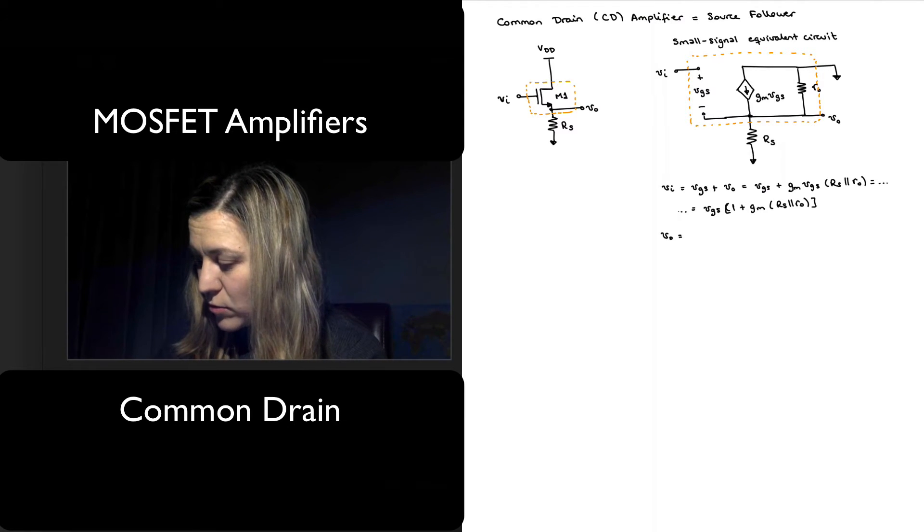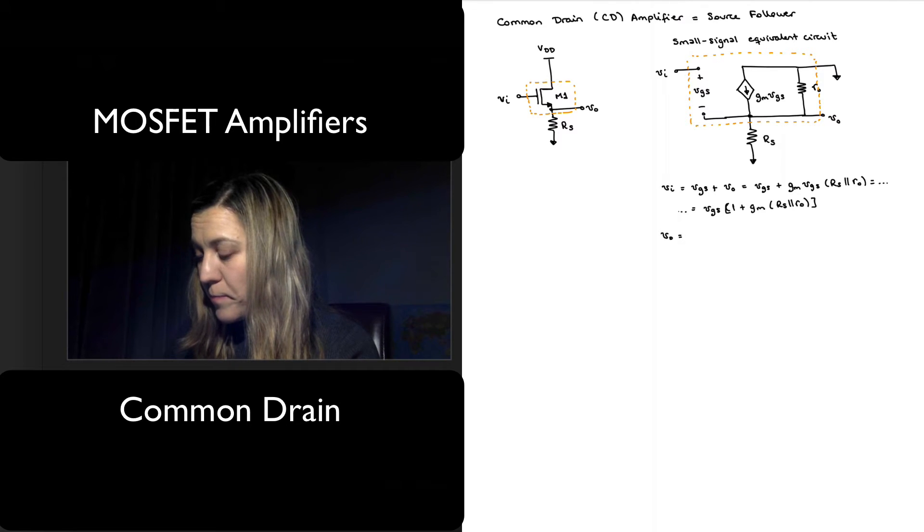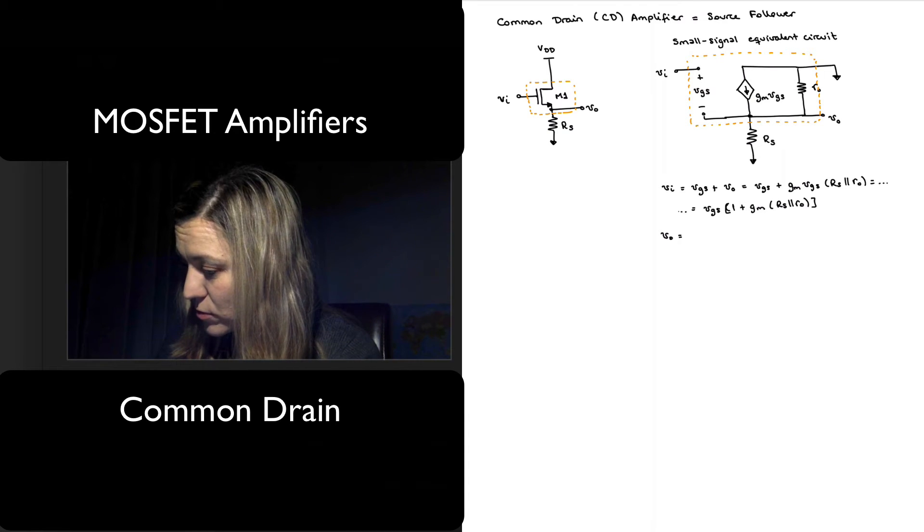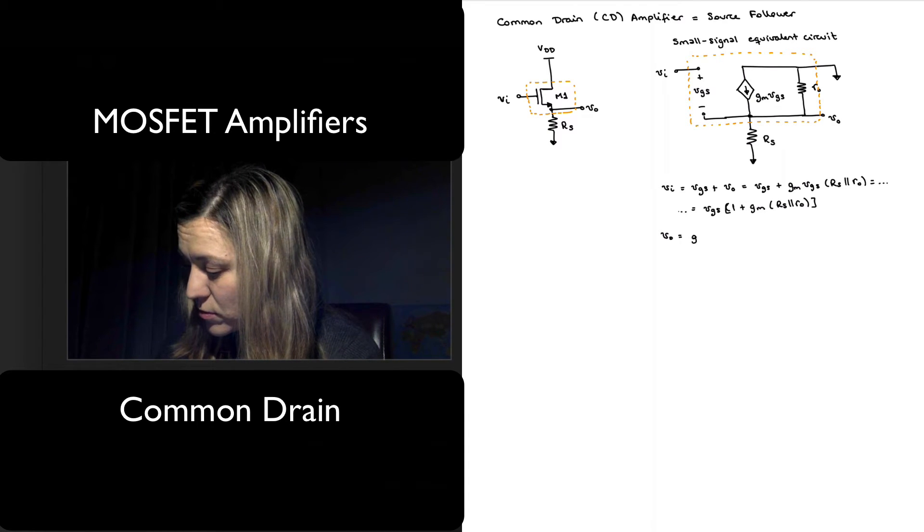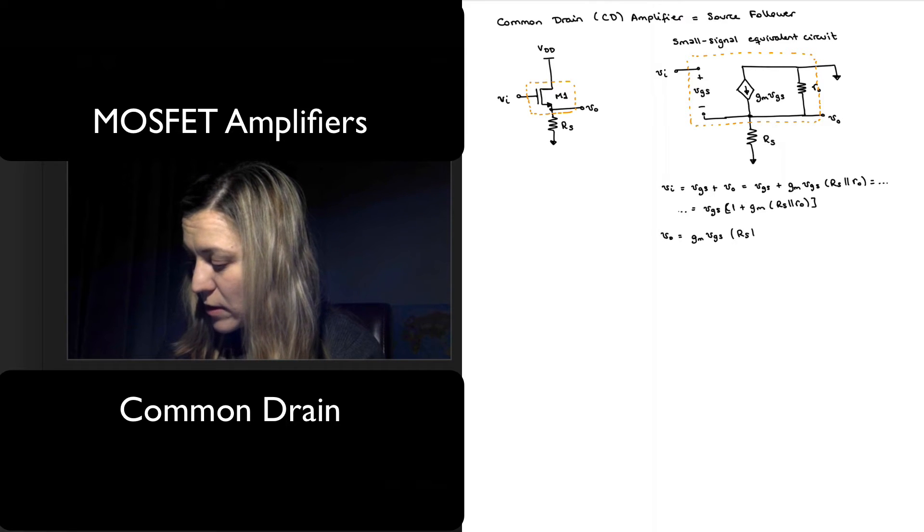So V_in will be equal to V_GS times (1 plus g_m R_S in parallel with r_out). And my V_out, the voltage here, is again going to be basically g_m V_GS times R_S in parallel with r_out.